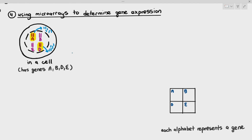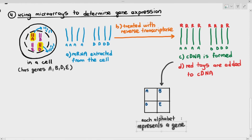Even though the cell has four genes, only genes A and genes D underwent transcription to produce mRNA. Genes B and E did not undergo transcription at all — they were inactive. But how do we prove this, since we can't see mRNAs or transcription under a light microscope?